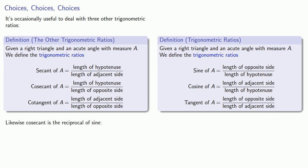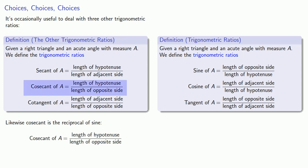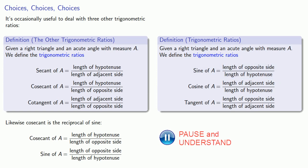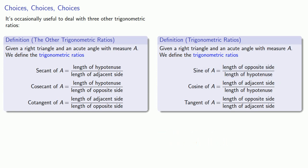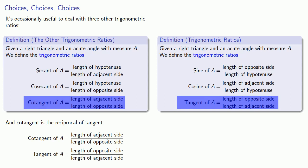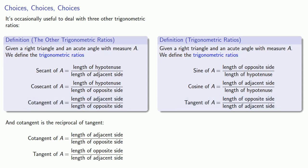Similarly, cosecant is the reciprocal of sine. Cosecant is the length of the hypotenuse over the length of the opposite side, and sine is the length of the opposite side over the length of the hypotenuse. And cotangent is the reciprocal of tangent — cotangent is the length of the adjacent over the opposite, while tangent is the length of the opposite over the adjacent.